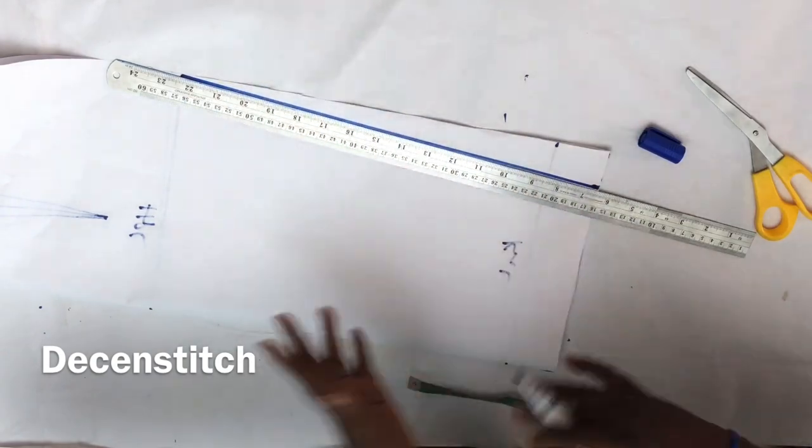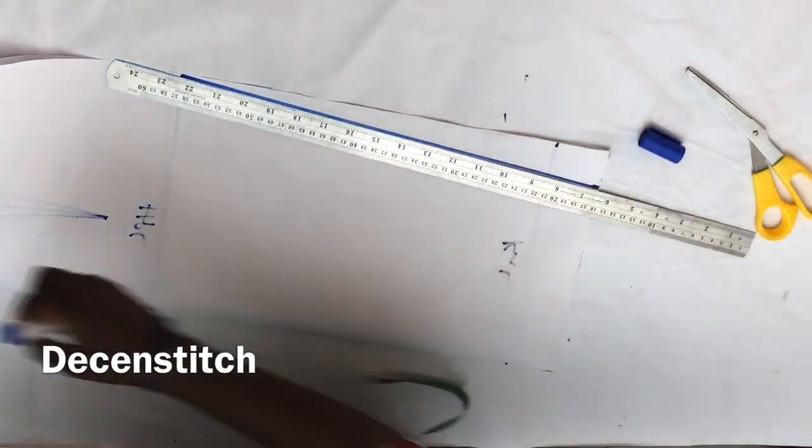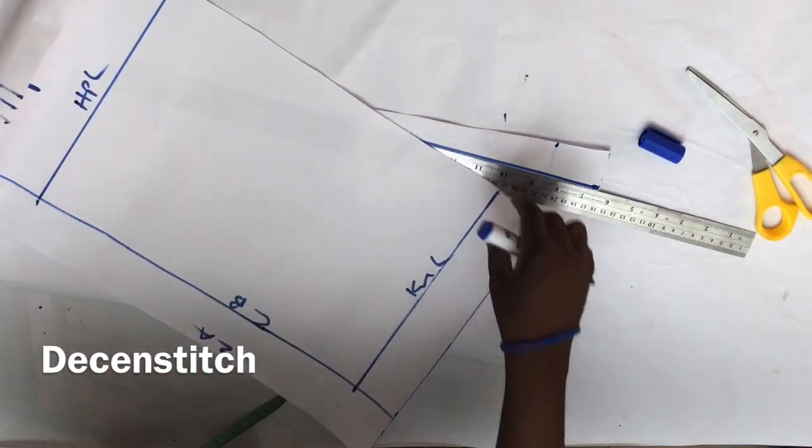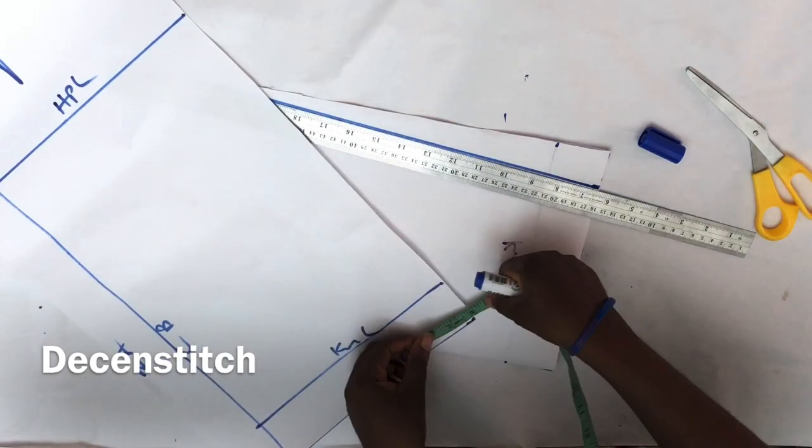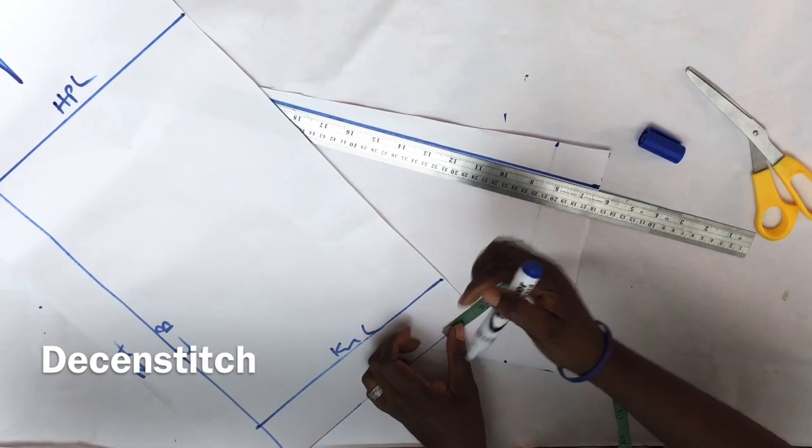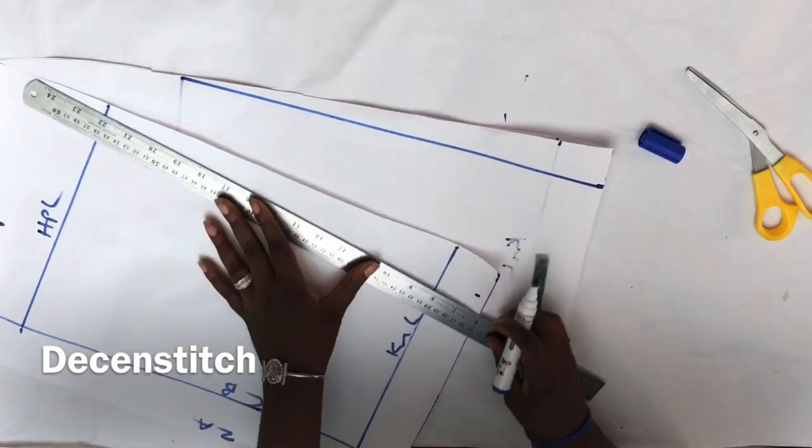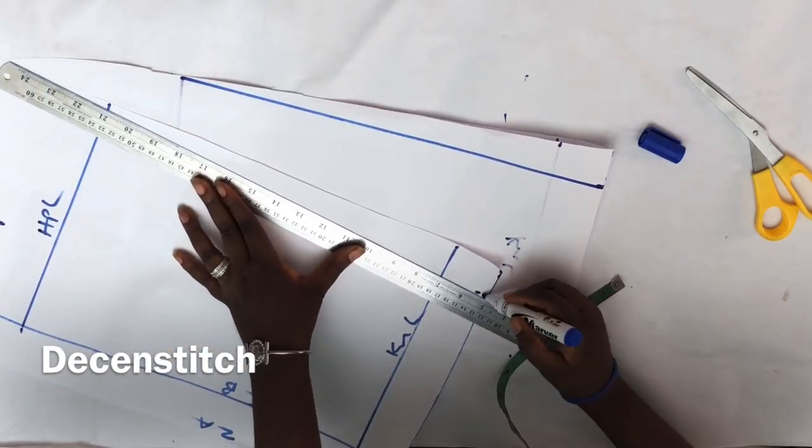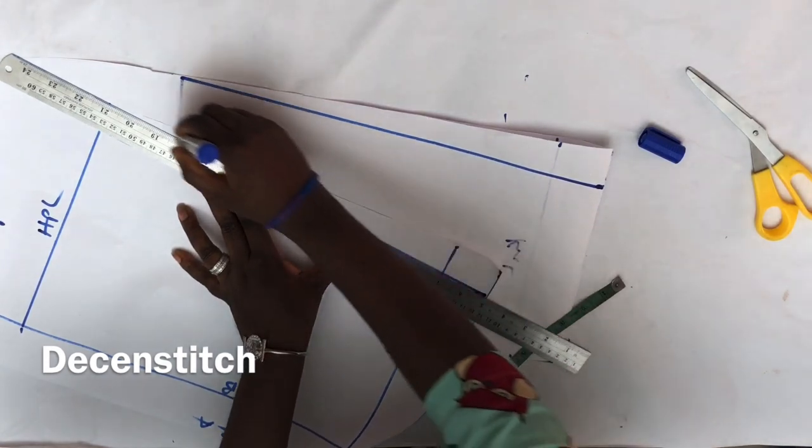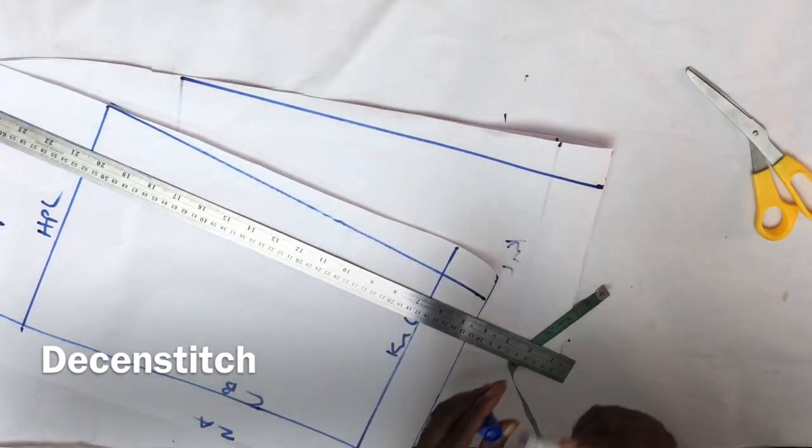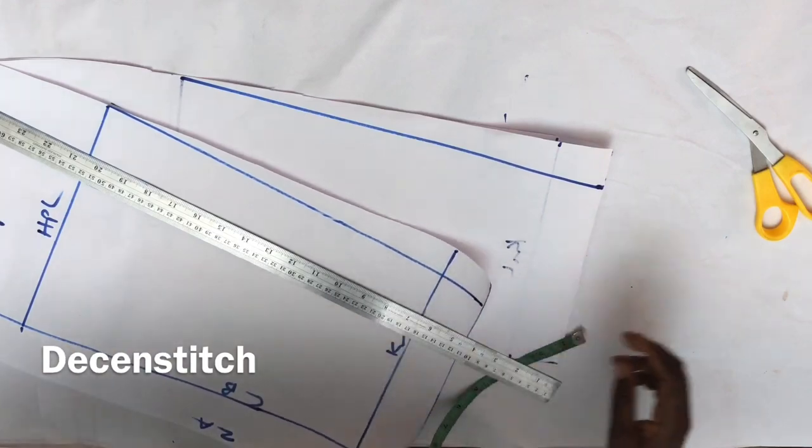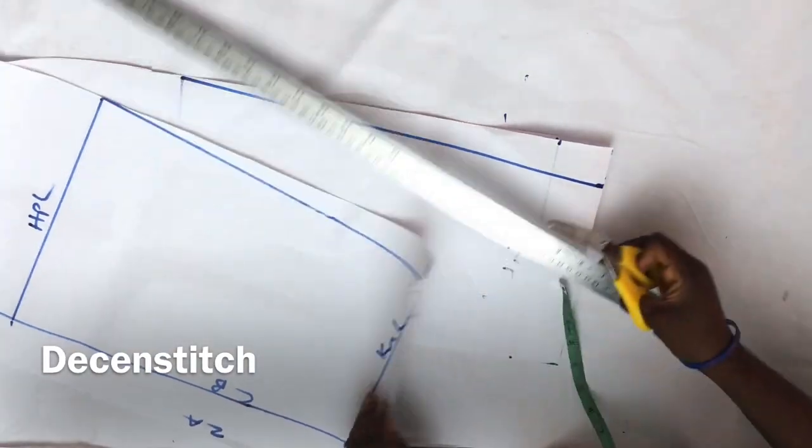I prefer to fold in half and do this so I have equality on both sides and it's faster. For the back piece, I'll do the same. I'll measure 1.5 down here at the end and connect it to the hip. Then cut them out and discard the side piece.